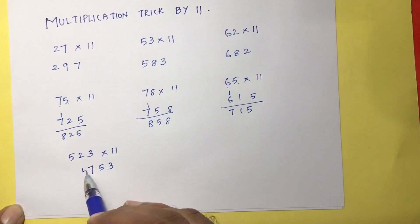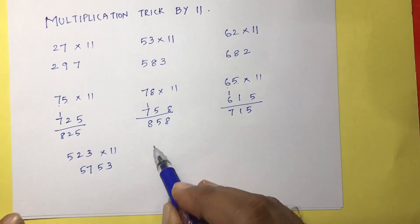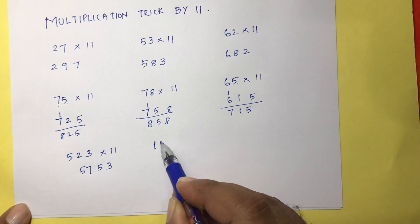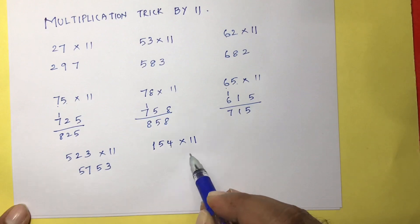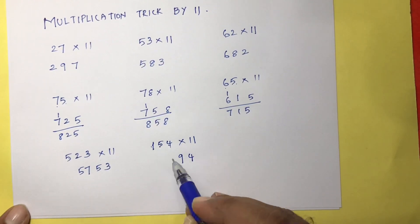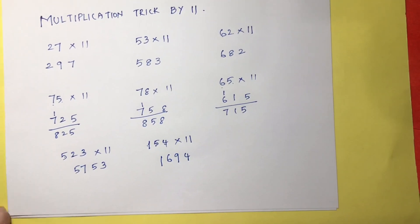In the same way, take one more: 154 times 11. So first write here 4, then 4 plus 5 is 9, then 5 plus 1 is 6, and at the end 1.